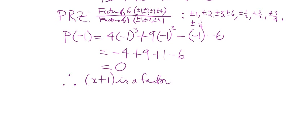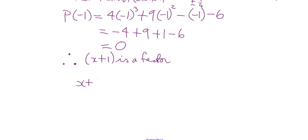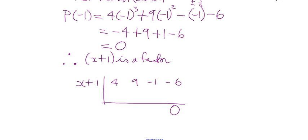We're going to do synthetic division. The original coefficients are 4, 9, −1, −6. We know we're going to get a remainder of 0, and if we don't, something's wrong — we'd need to recheck our work. Dividing by x + 1, we get: 4, 4, 5, 5, −6, −6, 0. So the quotient is 4x² + 5x − 6.